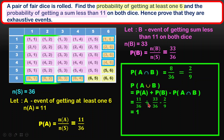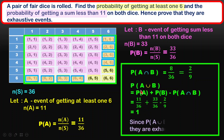Therefore, we can conclude that these two events are exhaustive events. P(A∪B) equals one, so we have proven that they are exhaustive events because the total probability of A plus B covers the entire sample space.